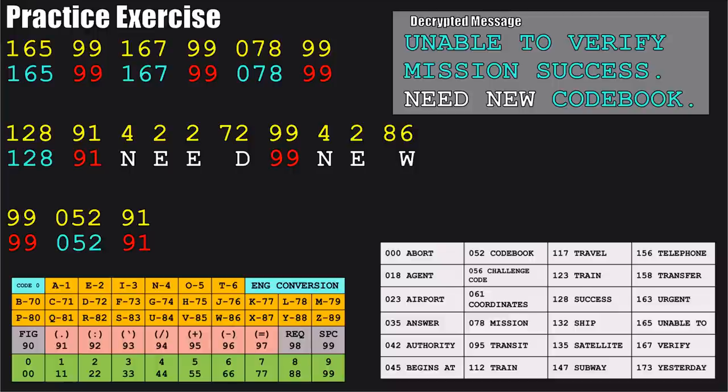In this practice message, I used quite a lot of words from the codebook — '165 space 167 space 078 space 128 period' — that's a whole sentence using just the codebook. That's why having a codebook is so important; you can convey complex ideas using basically encoded language. Following the rest of the message using our codebook, the message reads: 'Unable to verify mission success. Need new code book.'